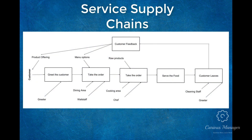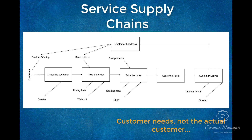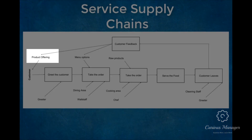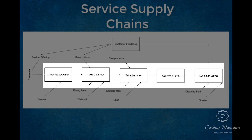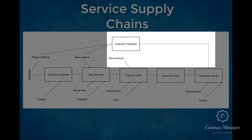Service supply chains differ from traditional manufacturing supply chains in that products procured are not used for manufacturing a product but instead for providing a predefined service. The main difference is that within a manufacturing supply chain, raw materials and the product flow through the supply chain to the customer, whereas in a service supply chain, the customer flows through the chain and products and services are provided to the customer as demand flows through. A simple service systems diagram of a restaurant illustrates this, where the product offering is defined beforehand, attracting the customer and starting the chain of processes from greeting the customer to the customer leaving.